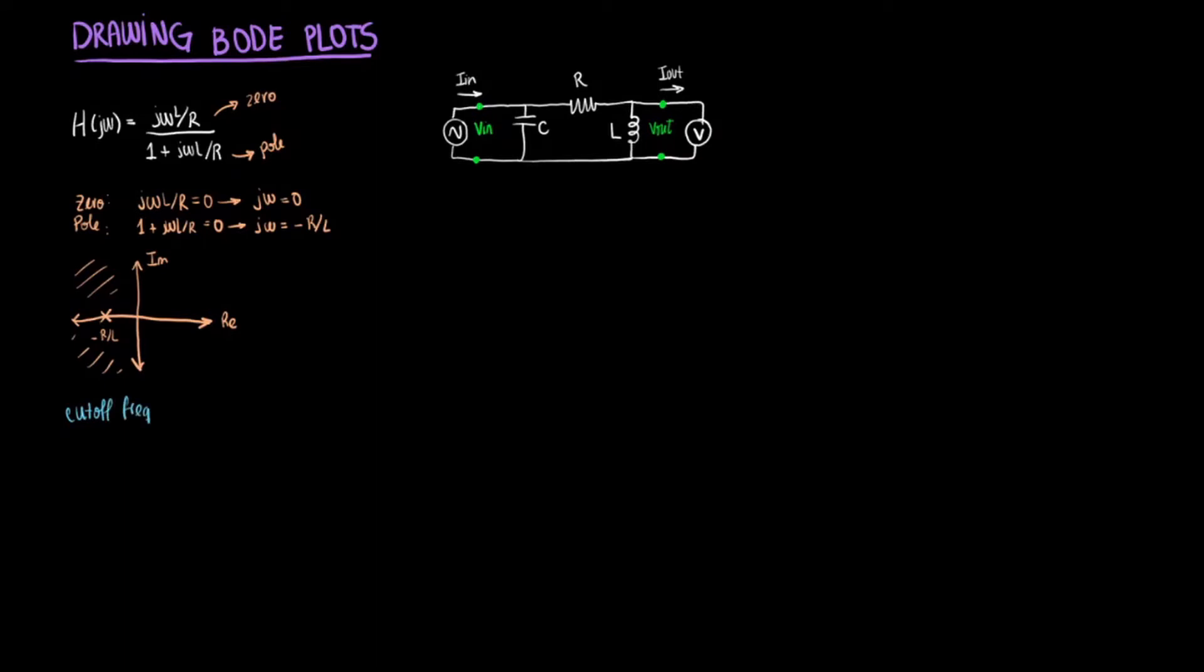If we look back at the transfer function, we see that it is written in a standard format with 1 plus j omega something in the denominator. And this is perfect. It gives us the cutoff frequency rather easily. We can call the something multiplying the j omega tau. So do you see the j omega here? And we have the L over R multiplying the j omega. We're going to call this tau. And the cutoff frequency is actually 1 over tau. So the cutoff frequency will be R over L radians per second.